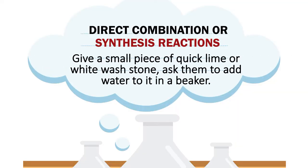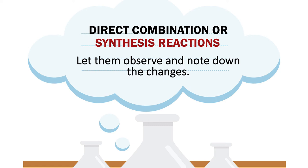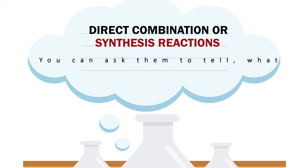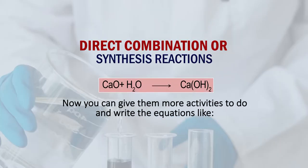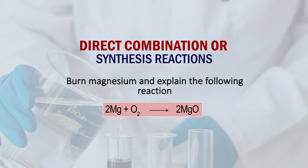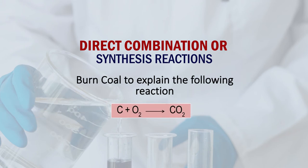Instead, you can start from their life experiences. Give them a piece of quicklime or white water stone and ask them to add water to it in a beaker. Let them do it. Do not tell them anything — just ask them to observe what is happening and note down the changes. Then ask what substances they added; they will say quicklime and water, and the formation is lime water. Can they write its chemical equation? They may write CaO + H₂O = Ca(OH)₂. If they do so, give them further opportunities — let them burn magnesium, burn sulphur, burn coal — and explain the product in the form of an equation.